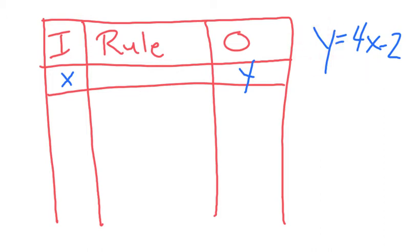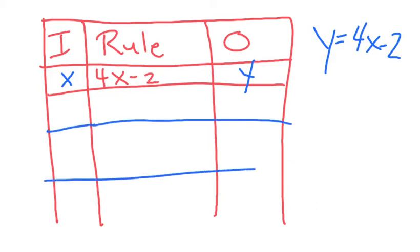So go ahead and put the rule here, 4x minus 2. Now, when you're doing these in this lesson, they already picked out the x's for you. So this part of the chart over here is already filled in, which is nice. So there are the numbers they picked.